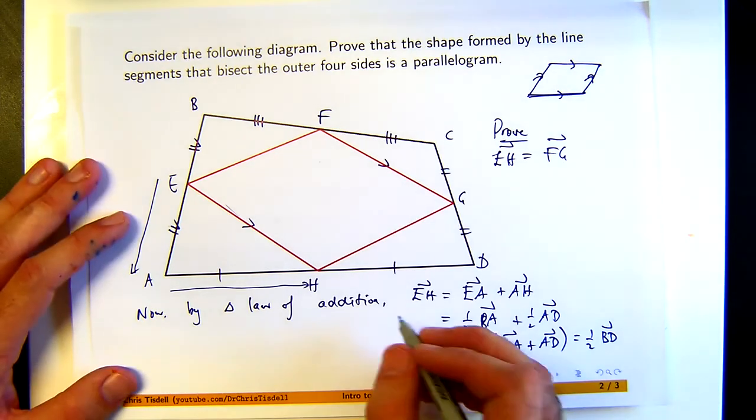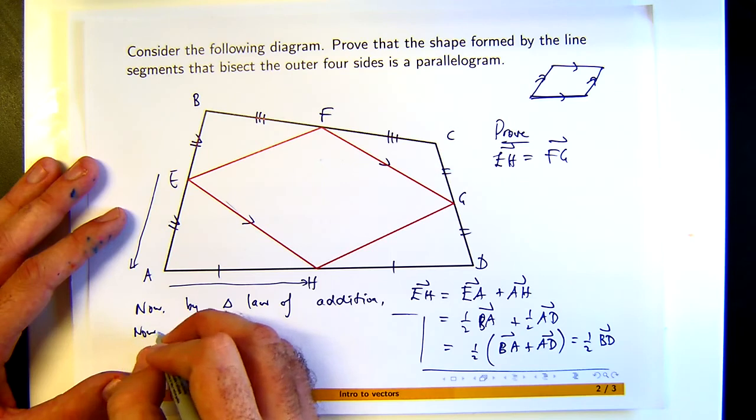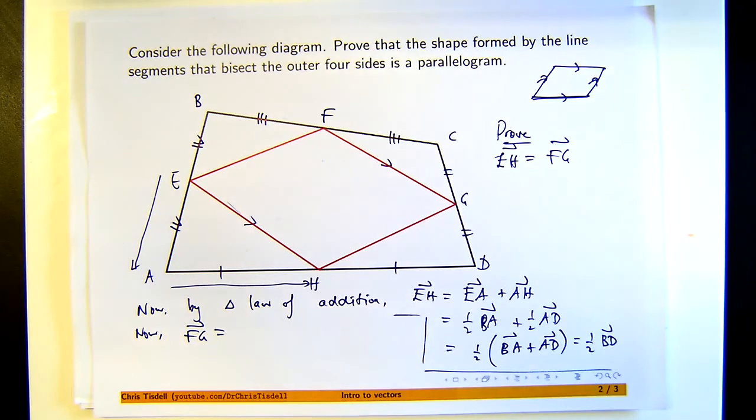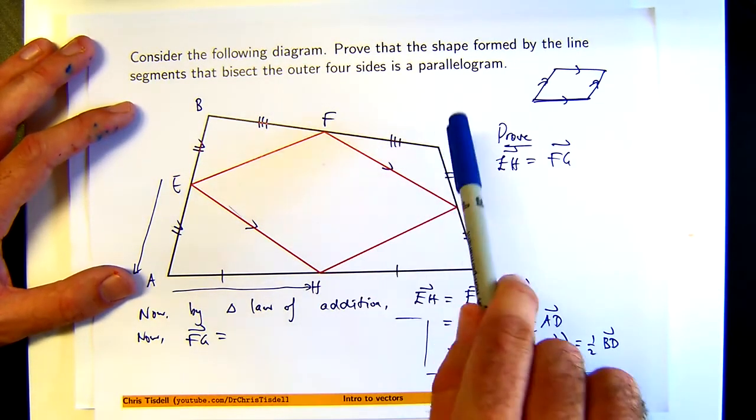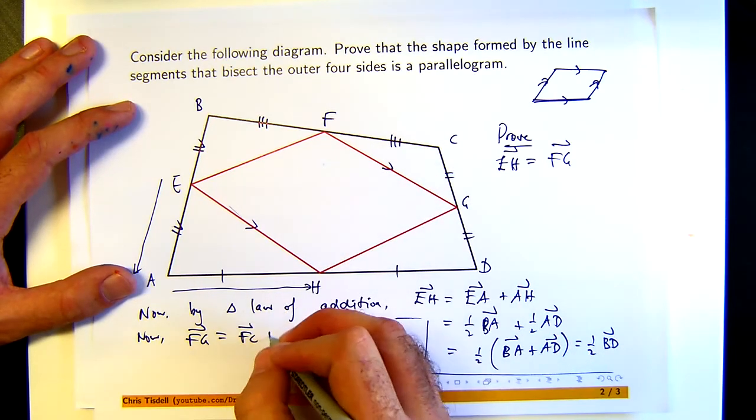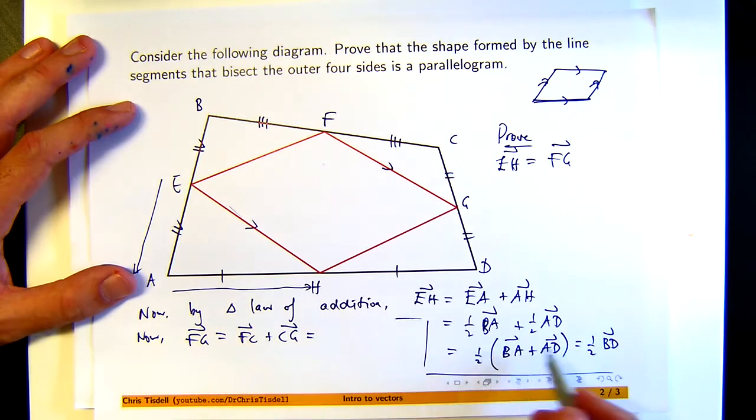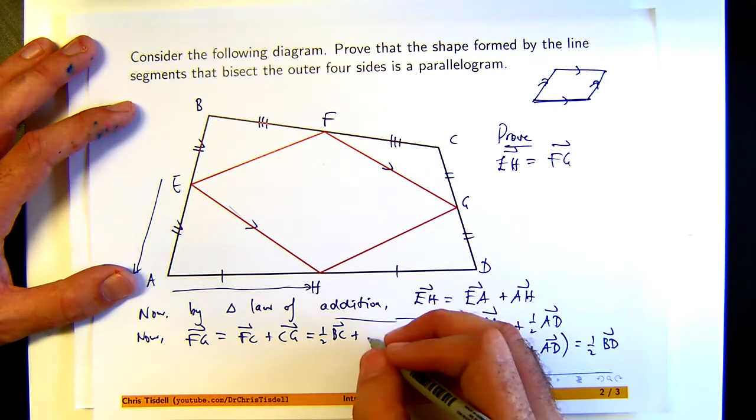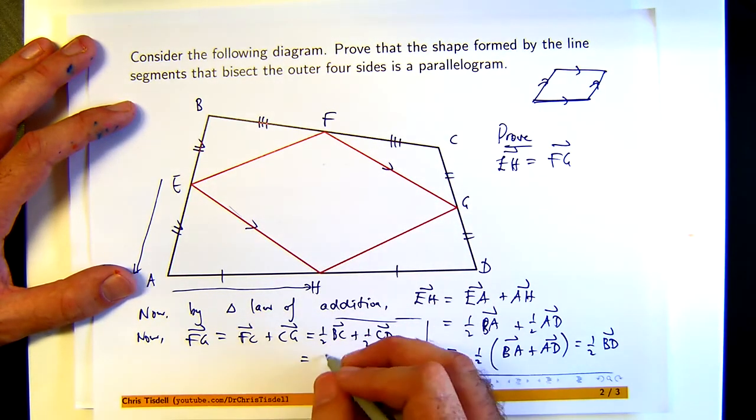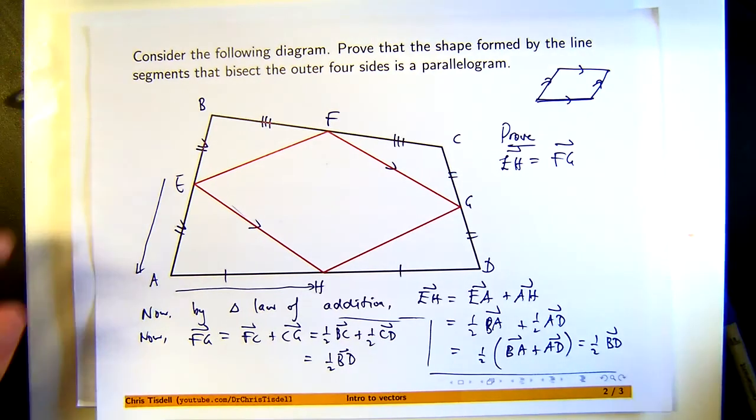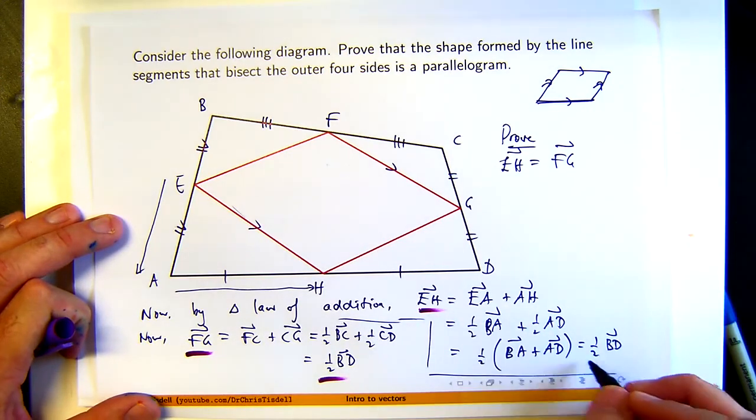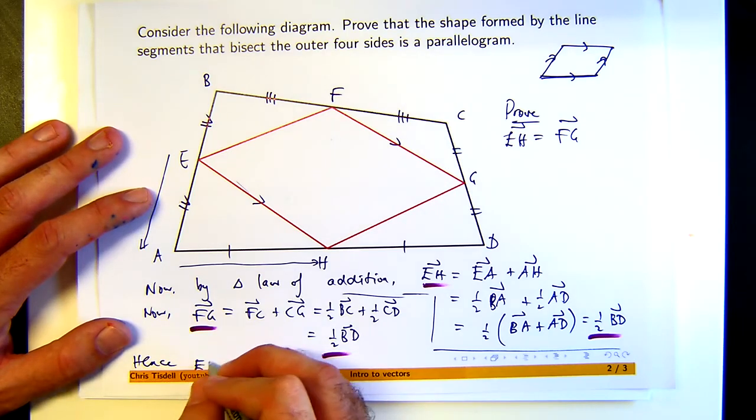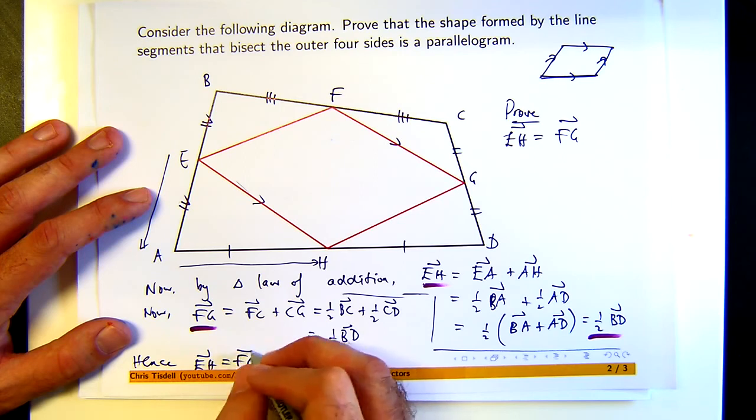Now, to show that this is equal to FG, let's work on the FG and go through pretty much the same process. So let's describe that perhaps in terms of that vector and that vector. And then you can do the same sort of thing. FC is a half BC. CG is a half CD. You can compress those down to a half BD. So you have these things equal.